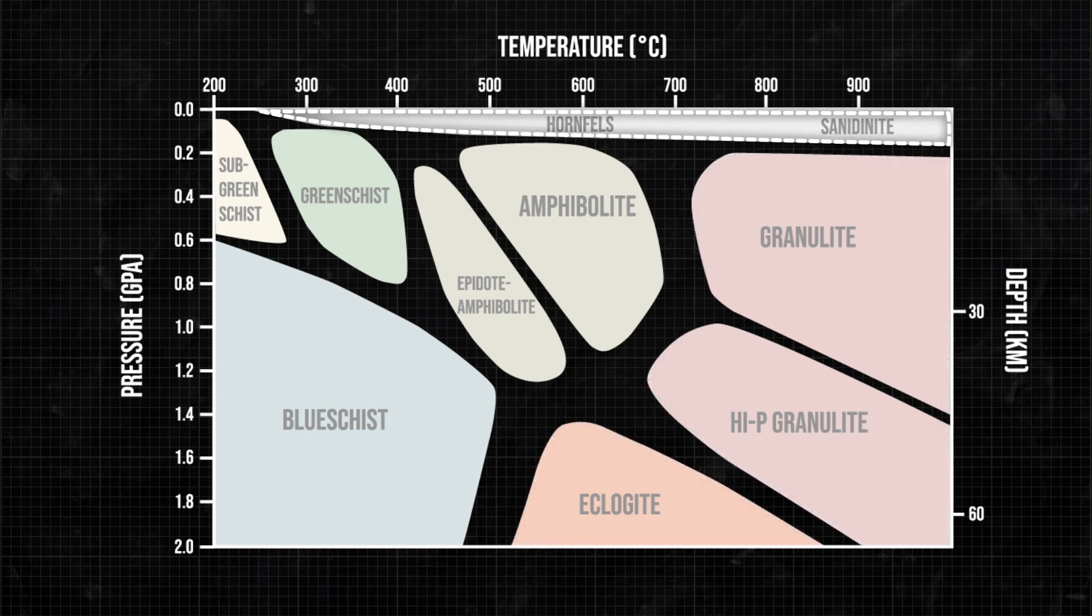Sanidine facies is named after the high-temperature polymorph of potassium feldspar that is often found in metamorphic rocks formed by contact metamorphism when a large, hot, igneous body intrudes sediments and bakes them.